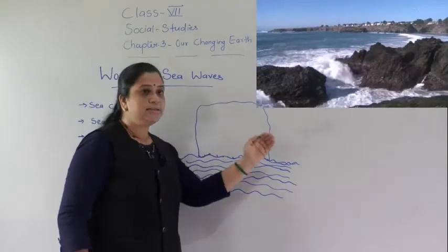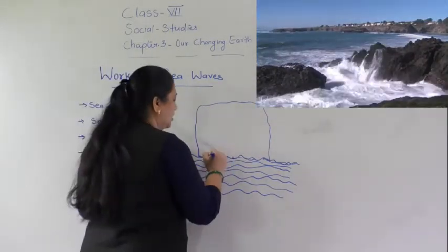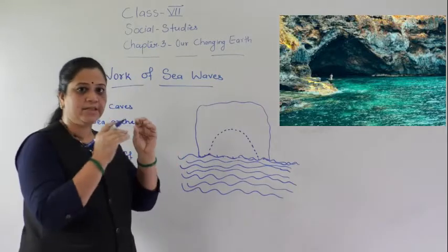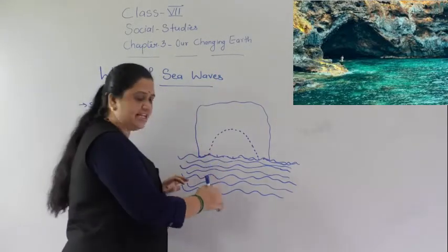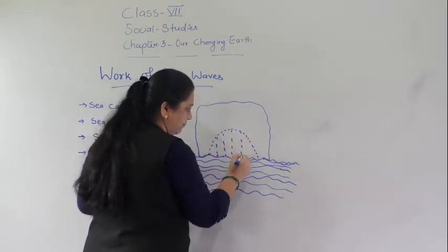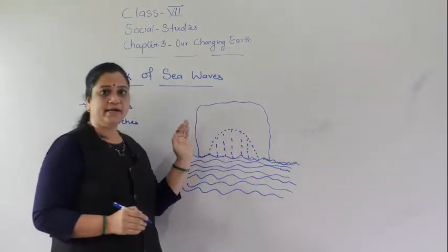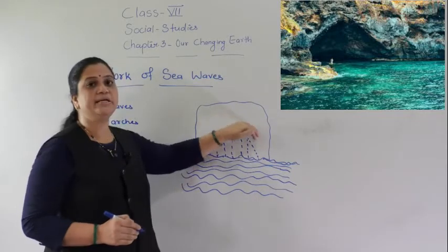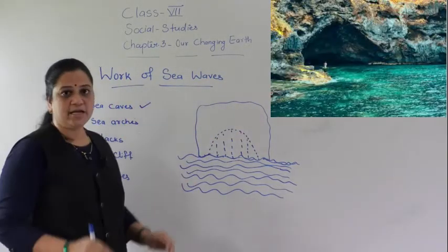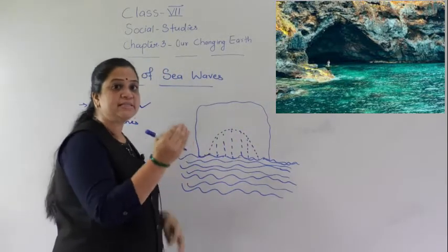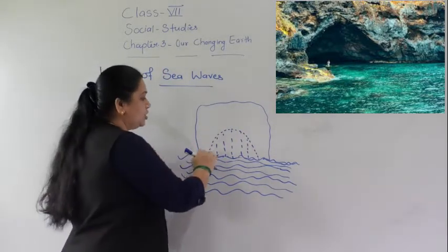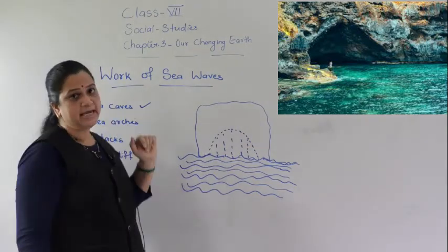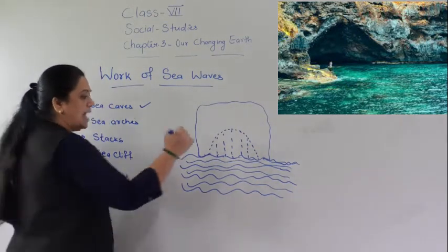When the sea waves continuously strike on the rock, cracks are developed. Every time, small pieces of rocks get deposited in the sea. Over time, these cracks become larger and wider. Thus a hollow shape is formed which is called the sea cave — a cave-like shape created in the rock by the continuous striking of sea waves.